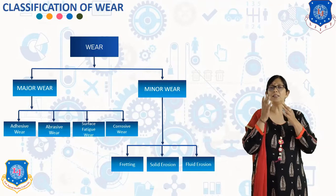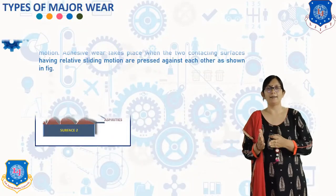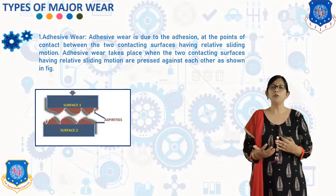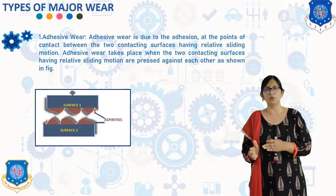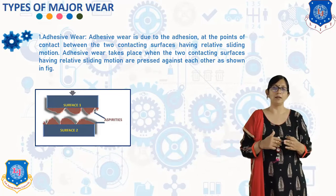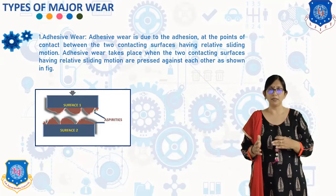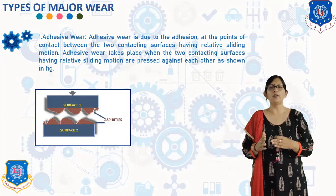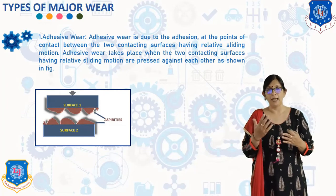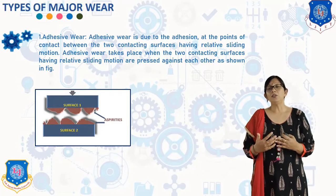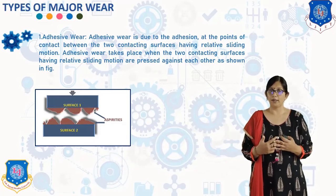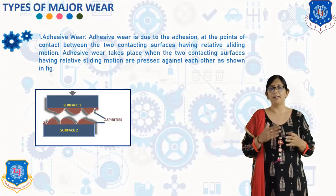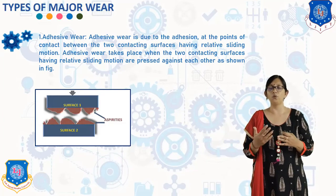The first type of major wear is adhesive wear. Adhesive wear is due to adhesion at the point of contact between two contacting surfaces having relative sliding motion. When the two contacting surfaces are pressed against each other, contact occurs at the asperities. Due to high contact pressure, plastic deformation takes place at the points of contact, leading to cold welding or adhesion. These welded contacts shear off during sliding, resulting in detachment of a fragment from one surface and its attachment to the other, or formation of loose wear particles.